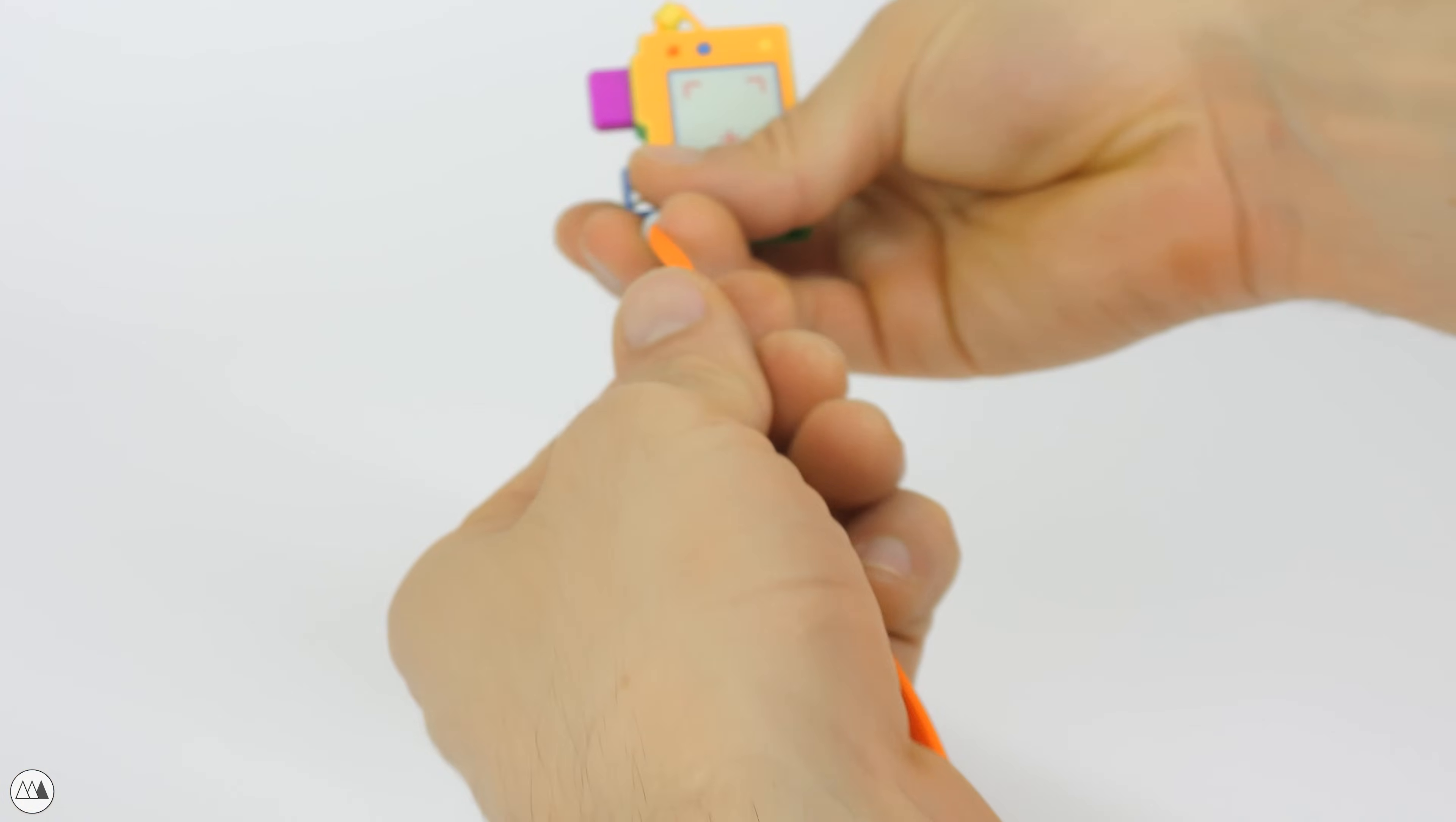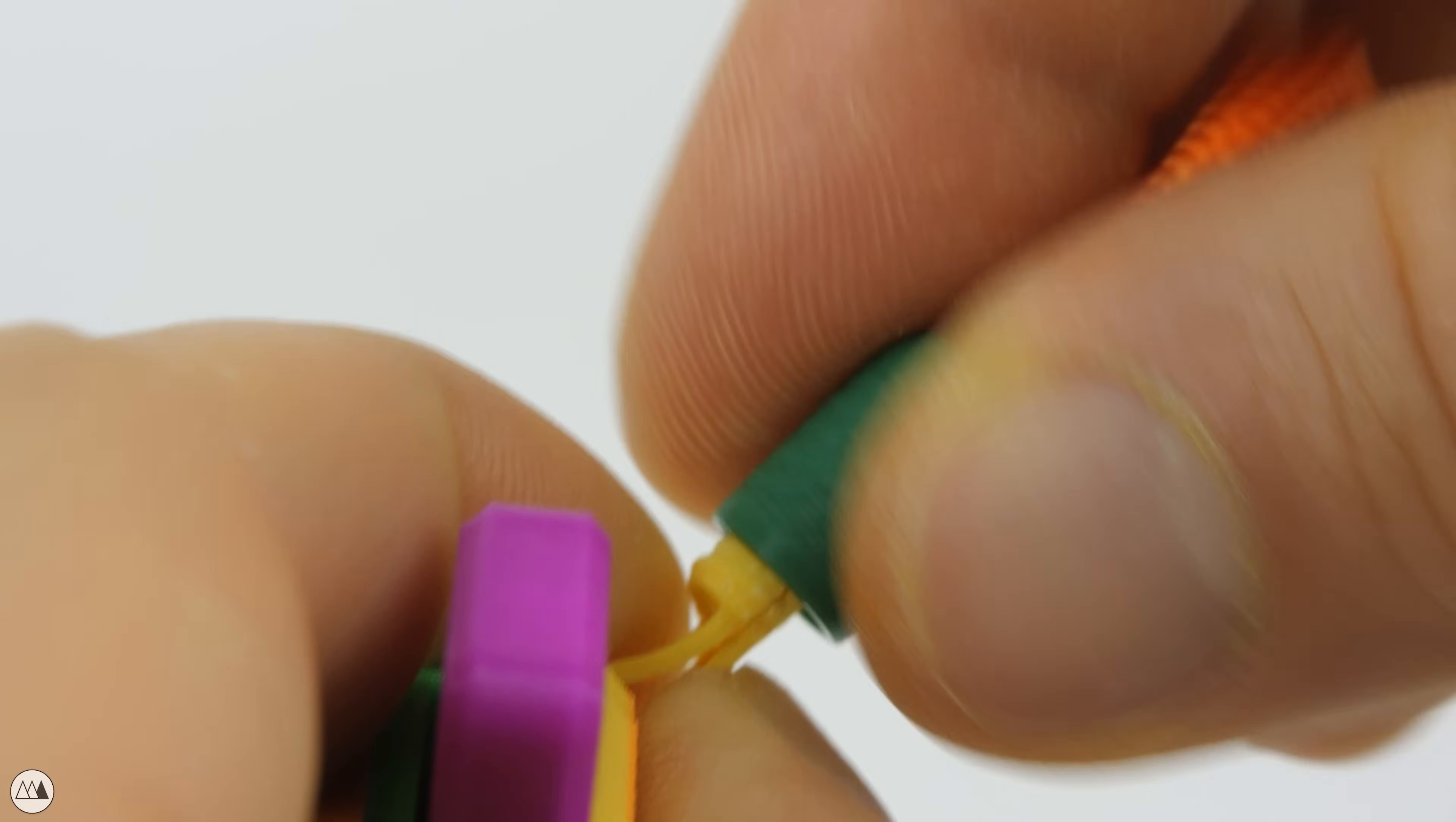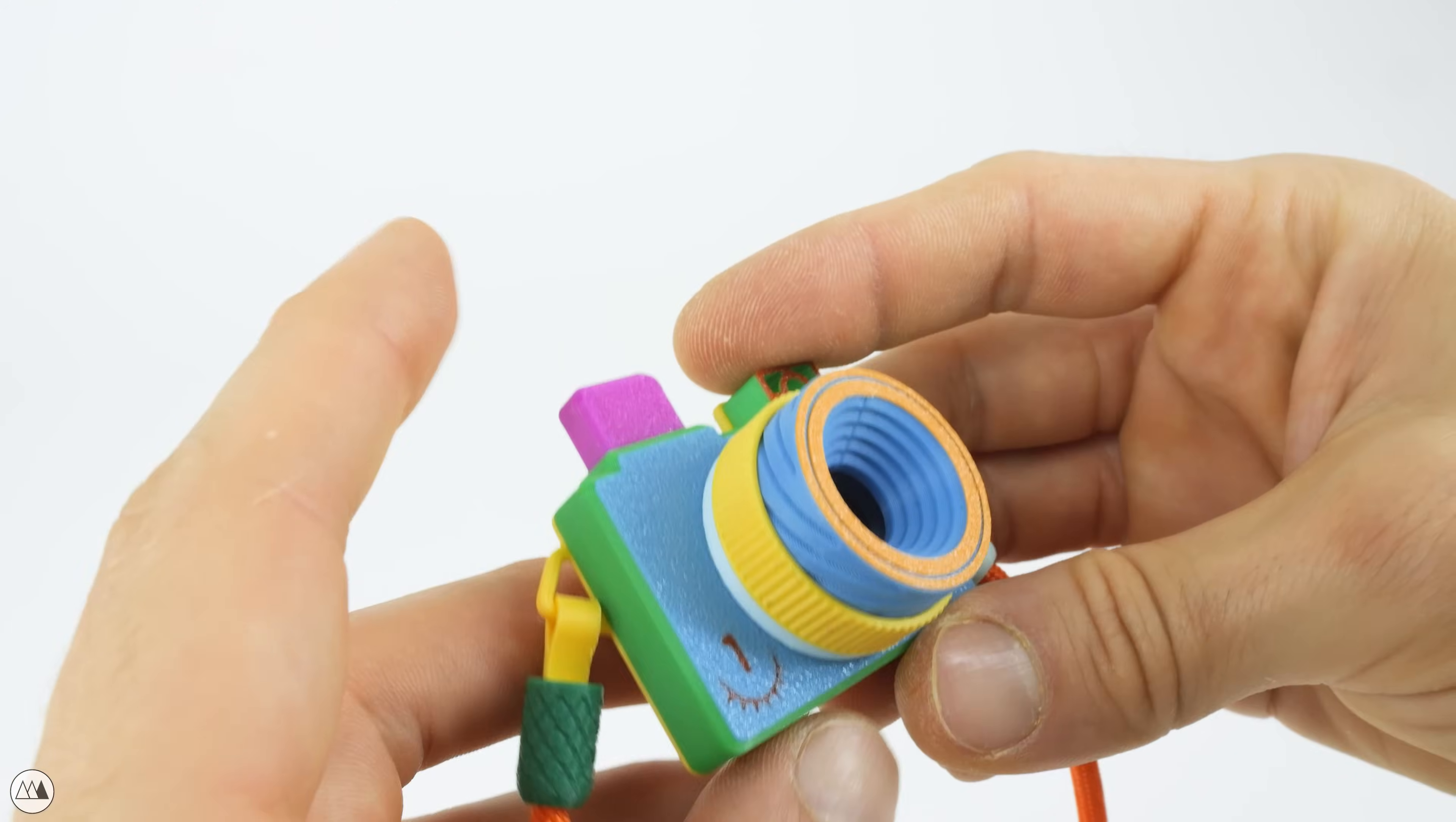And then straighten out our paracord so nothing's twisted. And for the same reason, I'll first twist the other side counterclockwise before screwing it on so it ends up nice and clean. And that's it! Here's our custom premium Momentus Mind camera, all set to capture some wonderful memories.